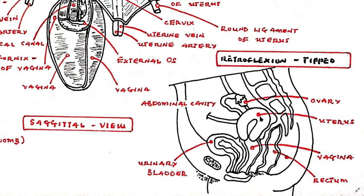A retroflexed uterus is predisposed to mild slipping into the vagina, usually referred to as prolapse of the uterus into the vagina. This is because a retroflexed uterus is more in the axis of the cervix and vagina. Such prolapse is generally resisted by the pelvic and urogenital diaphragms, the perineal body, and numerous fibrous ligaments such as the broad ligament and condensations of the pelvic fascia that anchor the uterus and its tubes to the pelvic wall and the sacrum.